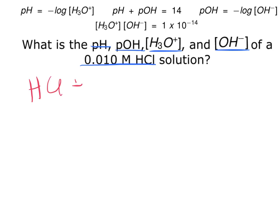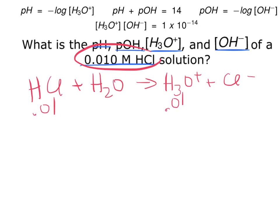HCl and water will make H3O+ and Cl-. So if the HCl is 0.01 molar, that means H3O+ is 0.01 molar and Cl- is 0.01 molar. So I guess the first thing I know is H3O+.